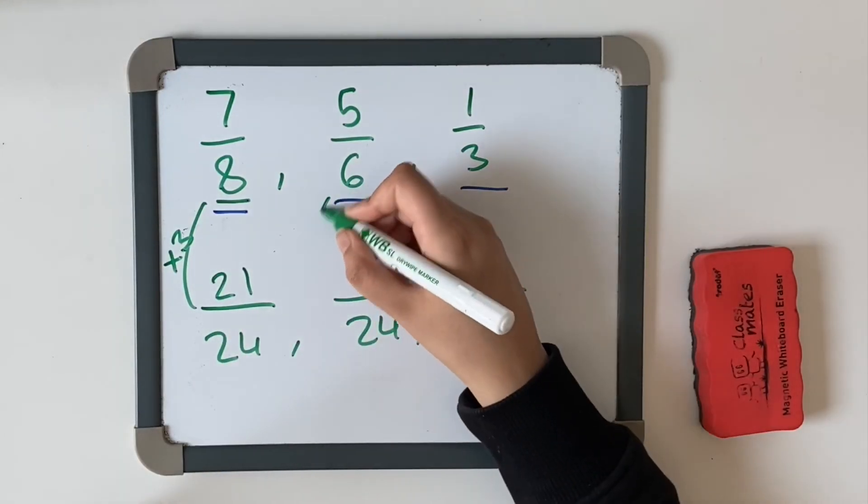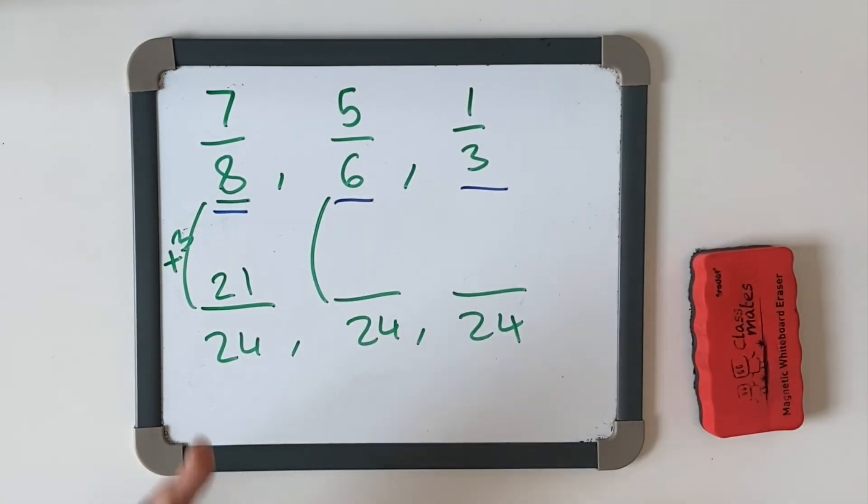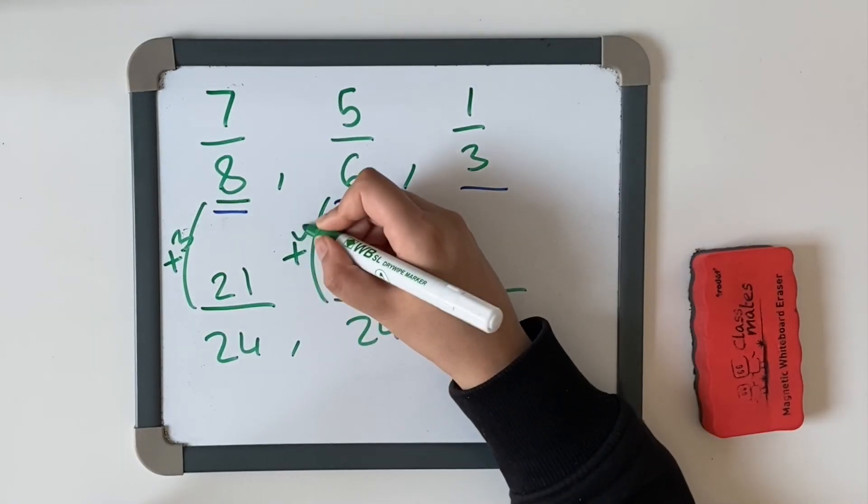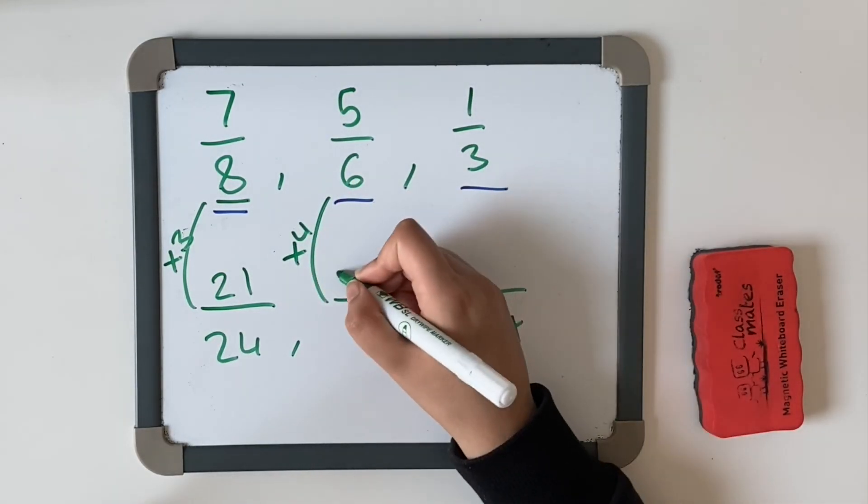Now let's do the same for this one. Six, 12, 18, 24. You're going to multiply it by 4. Five times 4 equals 20.